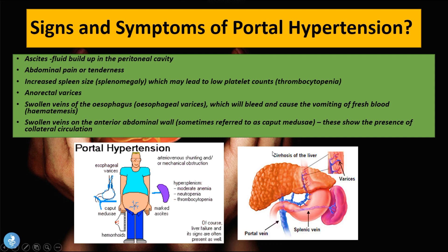One of the functions of the spleen is to reduce the platelet count of the body, so when the spleen starts to over-function it destroys a large number of platelets, causing thrombocytopenia — a low platelet count. Also as part of this collateral circulation and pooling of blood, anorectal varices will be present, causing hemorrhoids. The vessels all the way down to the anal canal become pooled with blood, becoming very tender and fragile and eventually rupturing.